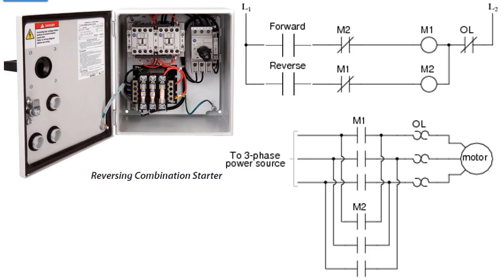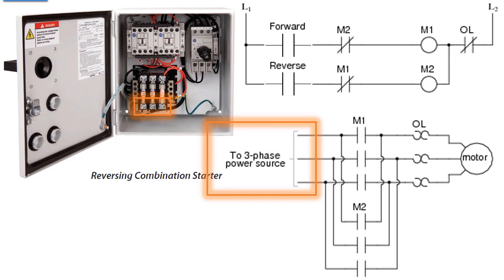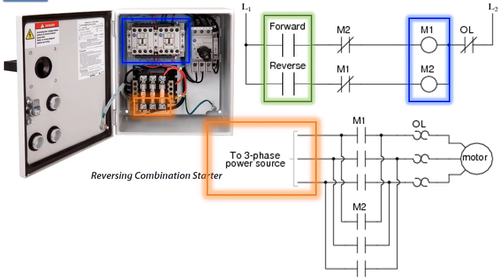Controlling a three-phase motor — I showed it with a starter. This is a reversing starter, which uses two starters. You have a three-phase power source connected at the bottom of those fuses in the panel. When you energize one of the two coils, M1 or M2, that closes the contacts that feed three-phase power to the motor. The difference between the three sets of contacts for M1 and M2 is that one of the phases for M2 is reversed from M1 — that's what makes it reverse. You control this with two outputs from a PLC.